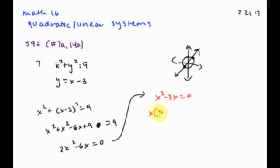Factor out x. x times x minus three equals zero. x equals zero. x minus three equals zero. x could be zero, or x could be three. Substitute back in the equation. x is zero, y is zero. Or wait. x is zero, y is negative three. Because if you sub zero, your y is negative three. If you sub three, y is zero.